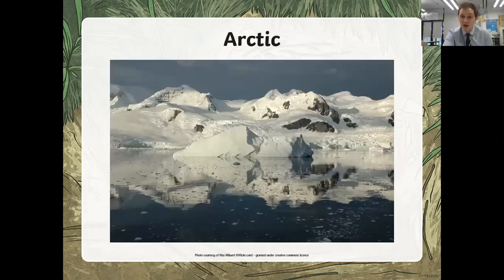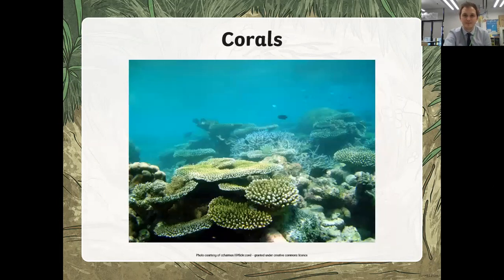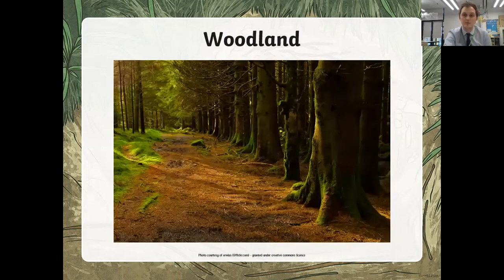Now the Arctic — very different to the African plains. What animals do you think we'd spot there? Maybe some penguins, maybe a polar bear. Now we're underwater. Remember there's a whole other place underwater and there's a whole set of animals under there. What animals do you think you could see swimming around in there? You can actually see some in that picture. We've got woodland now, and some of you may have been to Wendover Woods. What kind of animals would you maybe spot in there?